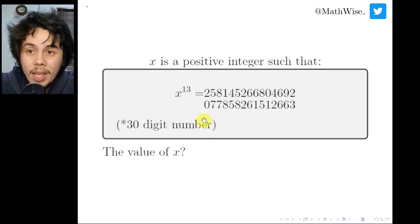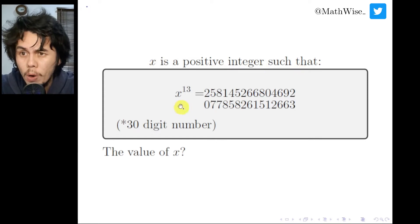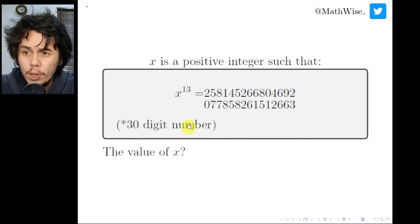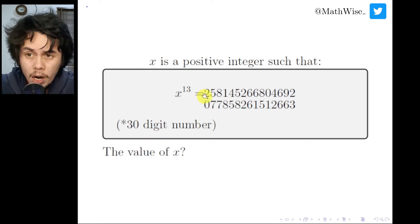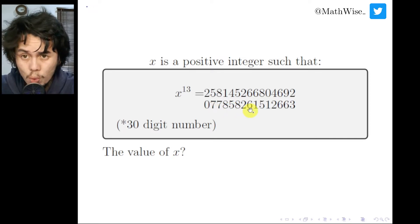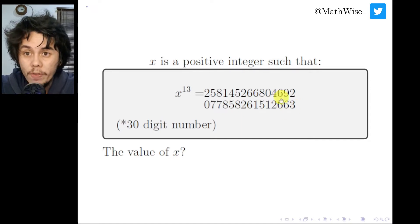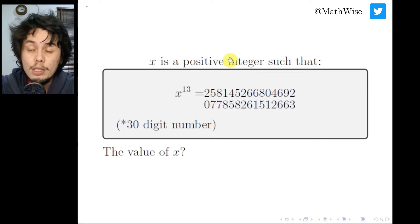Welcome back. This time we have an interesting problem from the Iran Math Olympiad 2008. We are given that x is a positive integer such that x to the power of 13 equals a 30-digit positive integer: 258145266804692077858261512663. Since x must be a positive integer, this equation is a Diophantine equation.